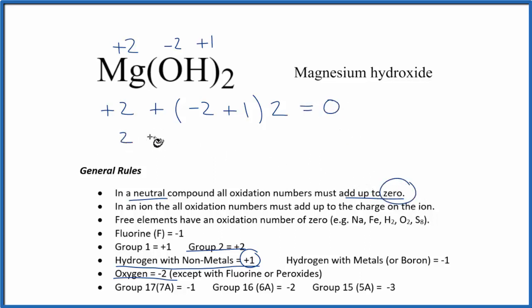So two plus—this is minus one times two—so that's minus two equals zero. Zero equals zero. True statement. These are the correct oxidation numbers for magnesium hydroxide, Mg(OH)₂.